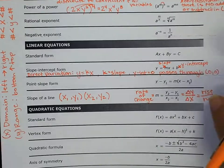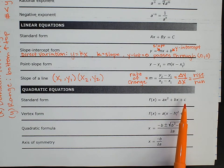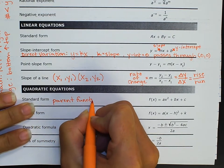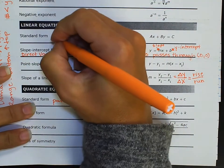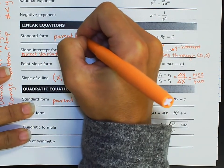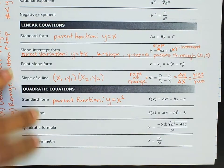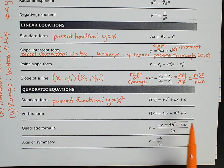Now let's go to quadratic equations. The standard form is f(x) = ax² + bx + c. Right here let's add the parent function — the parent function for quadratic is y = x². Let's do the same for linear: by standard form, let's write the parent function, which is y = x. Remember, the parent function is just the most basic function in that family. Having the parent function is important because sometimes they may ask you to compare an equation to the parent function.